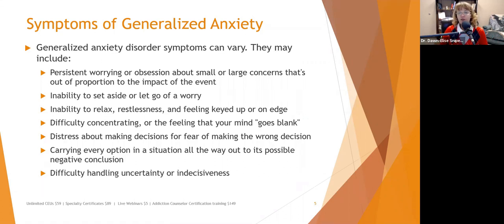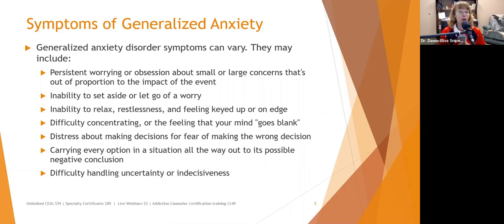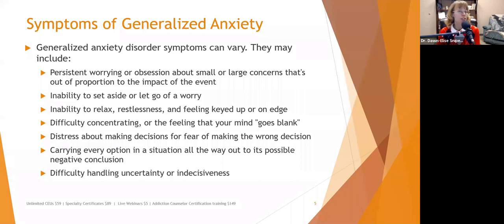The person may have distress about making decisions for fear of making the wrong decision. We want to help them figure out how to deal with that — whether through getting consultation from a support person, weighing pros and cons, or examining their anxiety about the wrong decision. What's the worst that will happen if you make this decision, and how can you deal with it?